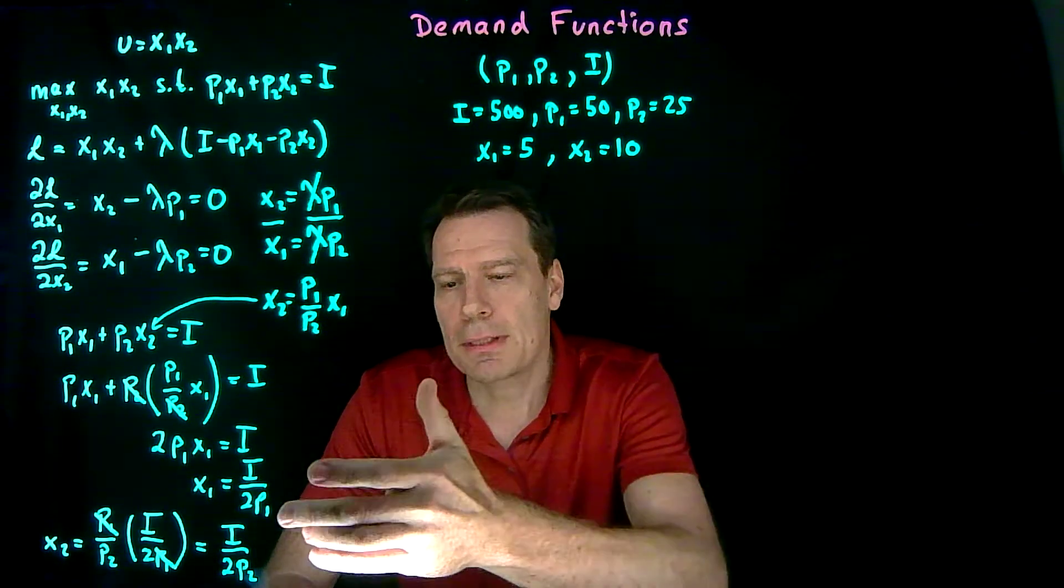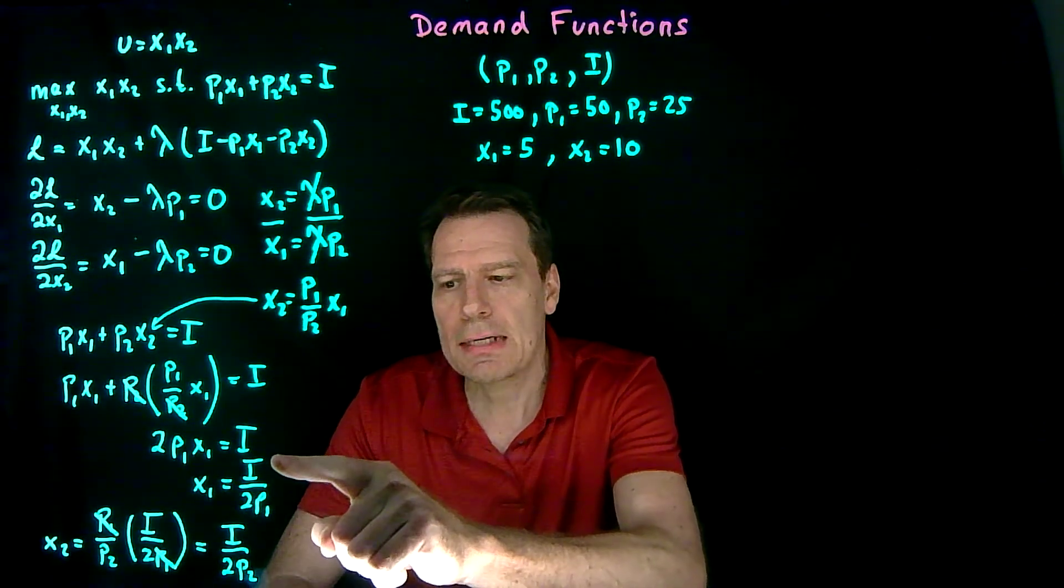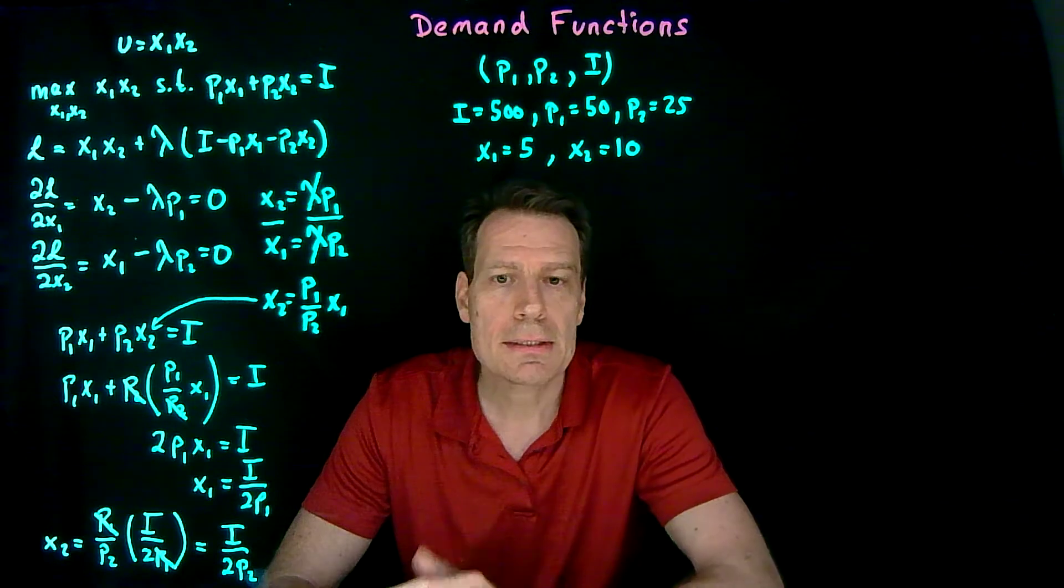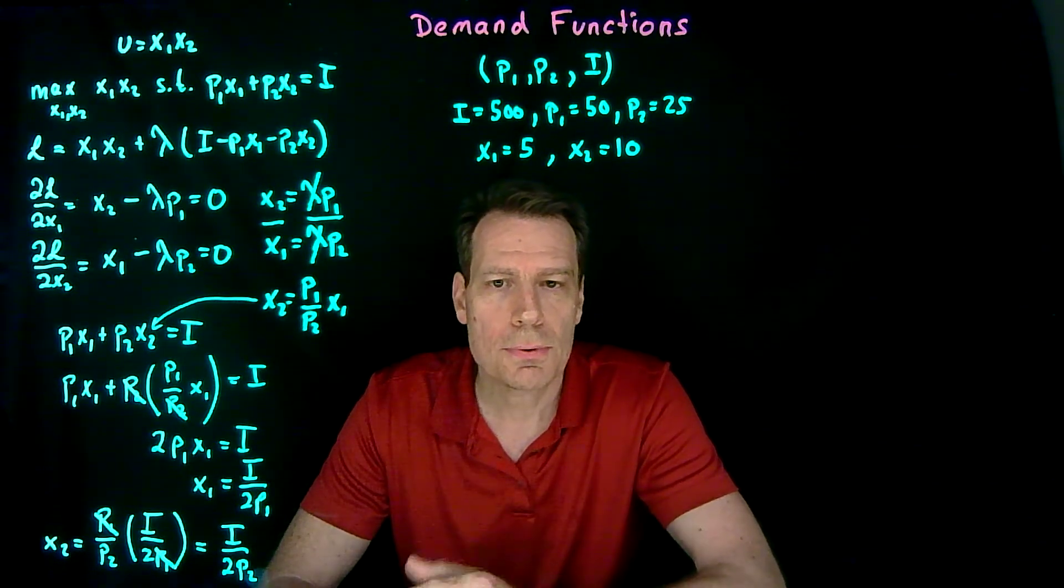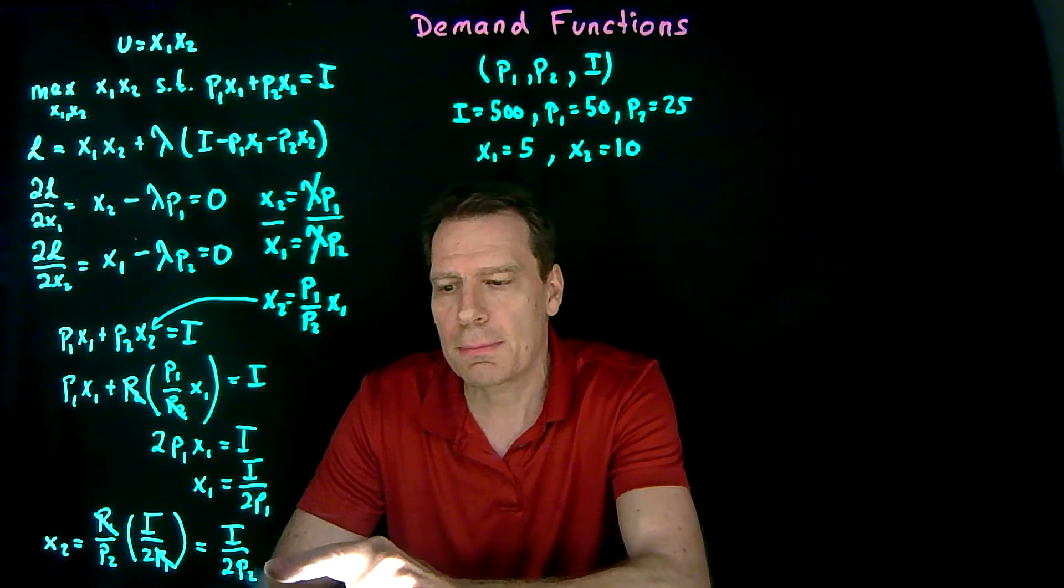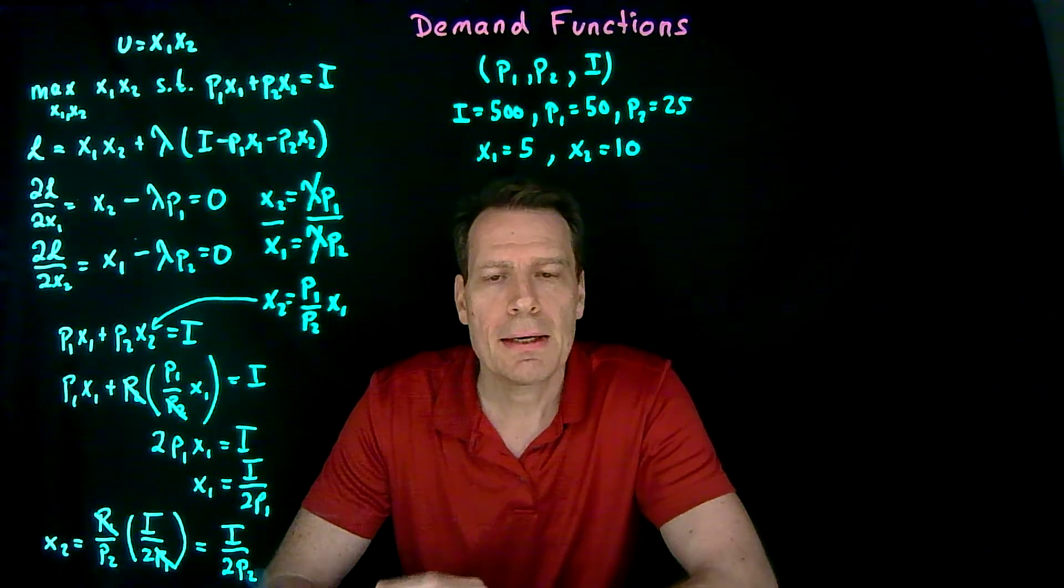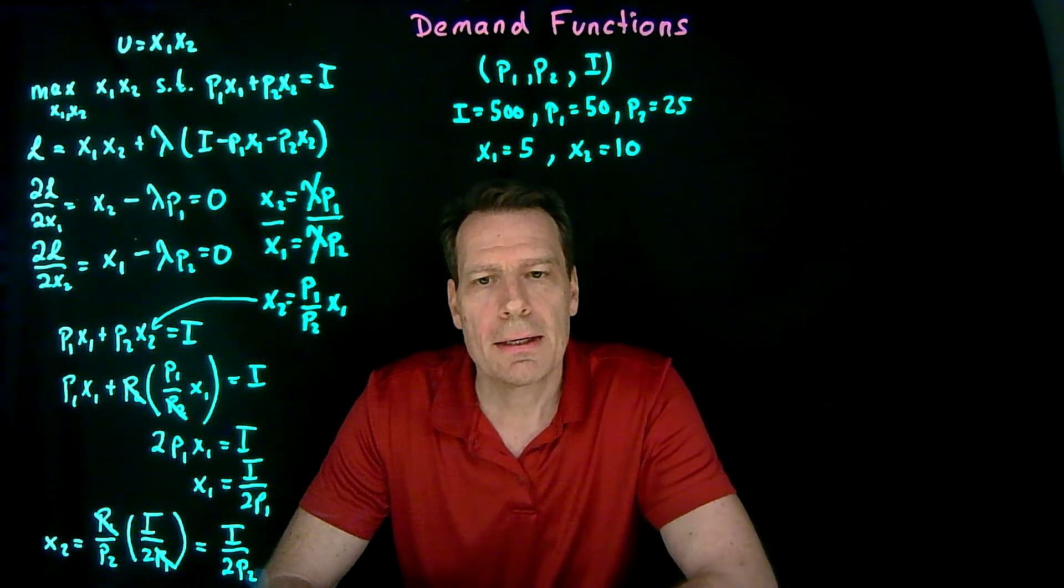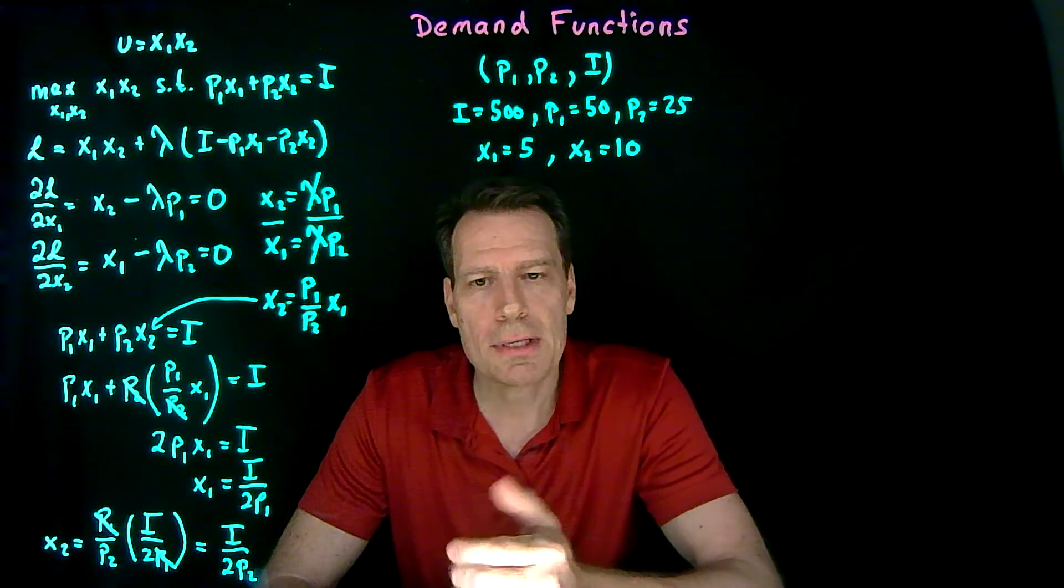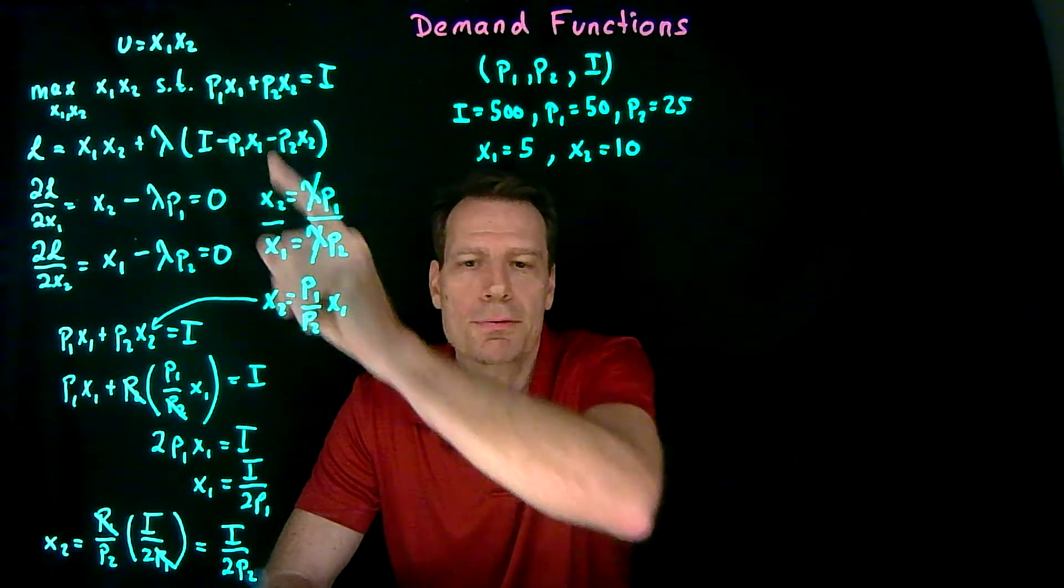Now, in this particular case, the demand for x1 is just a function of income and the price of good 1. It's not a function of the price of good 2. And similarly, the demand for x2 is just a function of income and the price of good 2, but not of the price of good 1. That's a special case. It emerges from indifference maps that can be represented by utility functions that take the Cobb-Douglas form.